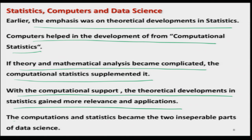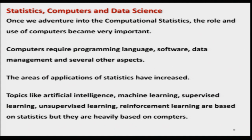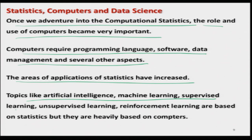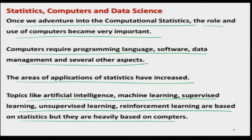Earlier there was an emphasis only on theoretical development in statistics, and theoretical developments lay the foundation for data science and big data analysis. But many times after developing the theory it was not possible to judge whether the tools were really working on a given set of data. Then computers helped in the development of what is now termed computational statistics. Nowadays, if the theory or mathematical analysis becomes complicated, computational statistics supplements us. With this computational support, theoretical developments in statistics gained more relevance and more applications were created. Computation and statistics have become the two inseparable parts of data science. Topics like artificial intelligence, machine learning, supervised learning, unsupervised learning, and reinforced learning are all based on statistics — they use concepts from statistics but are heavily computer-based.